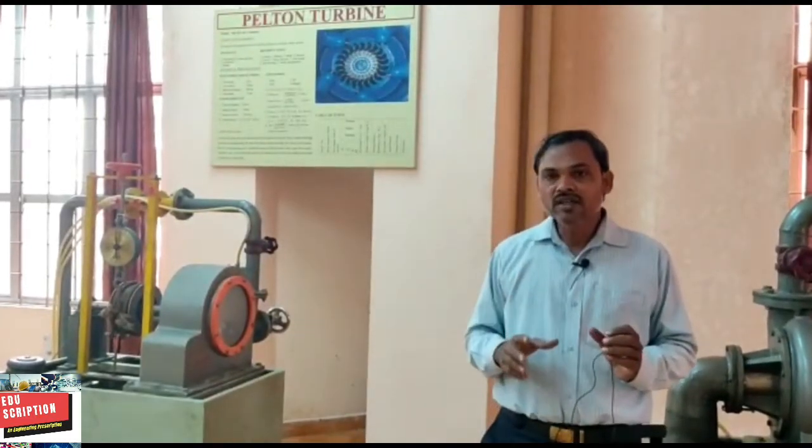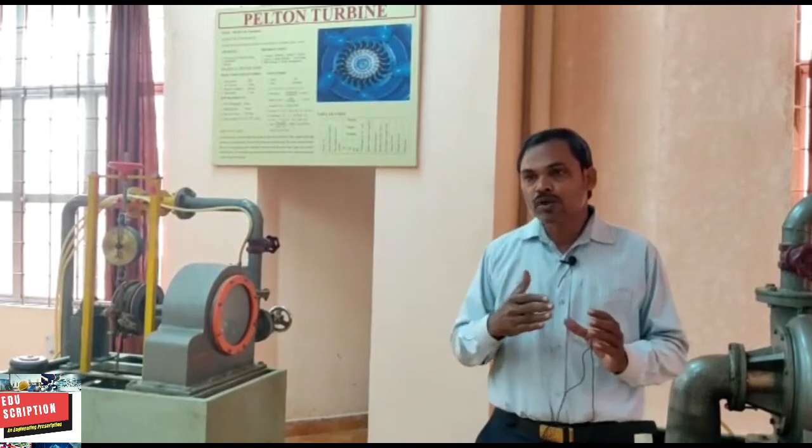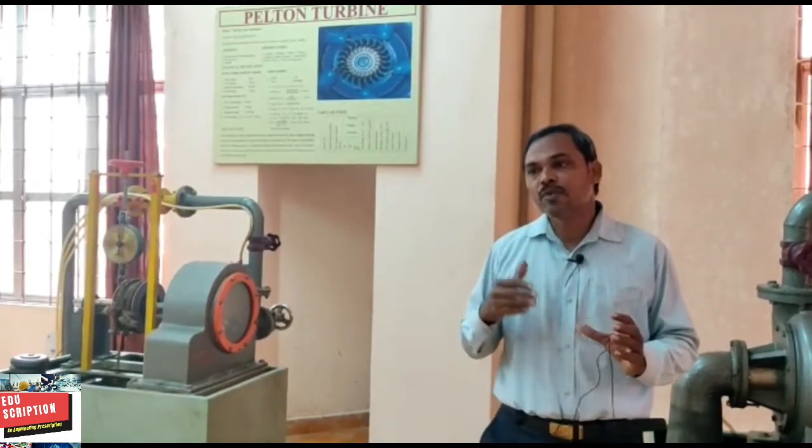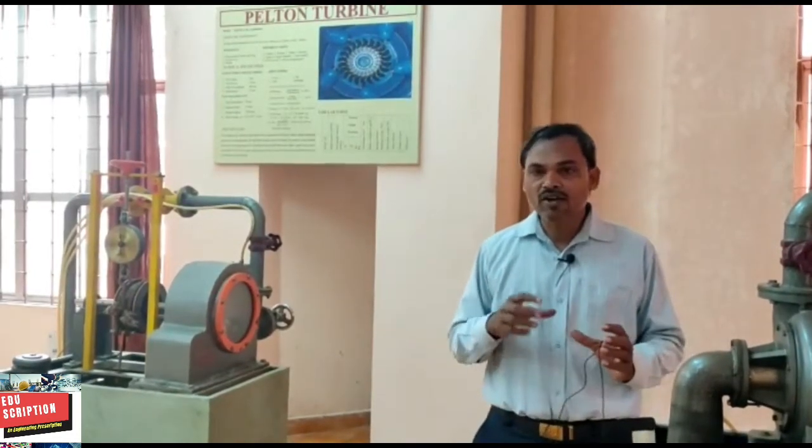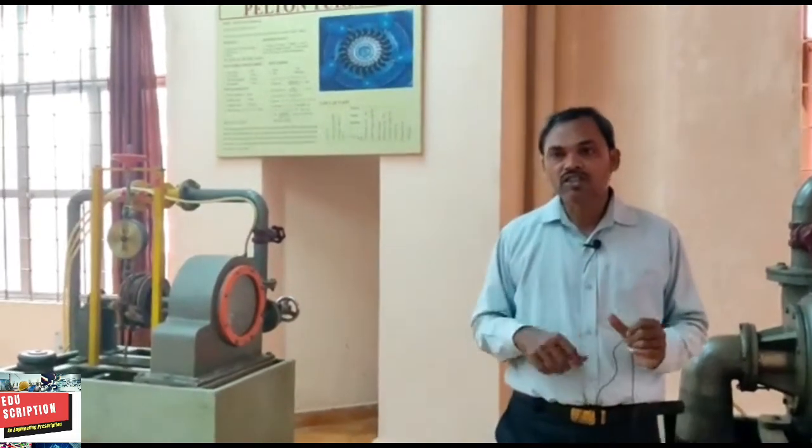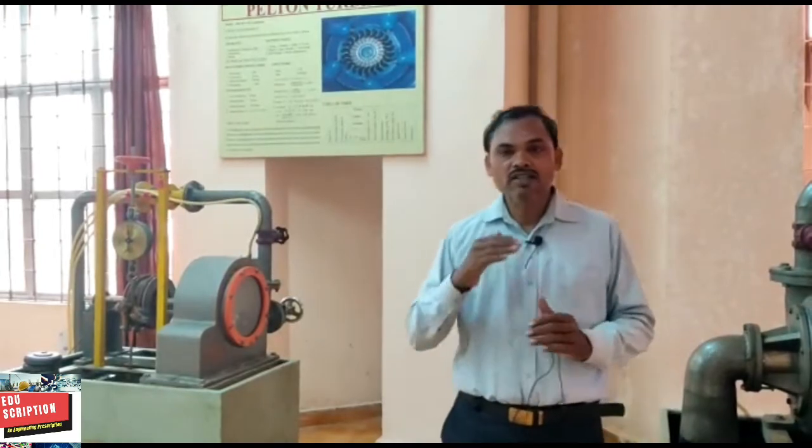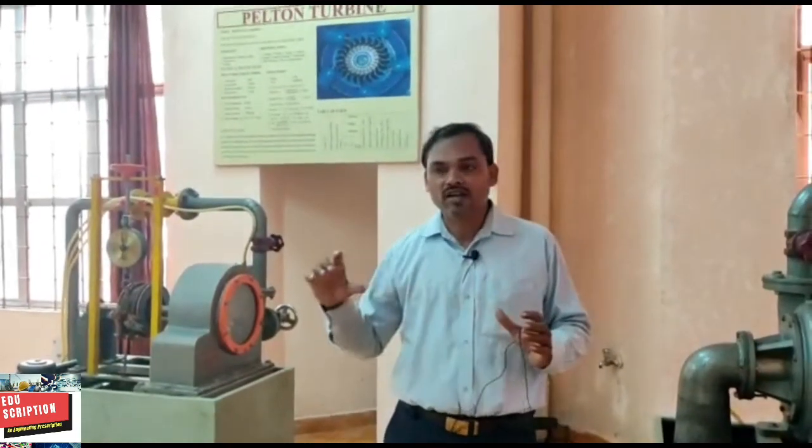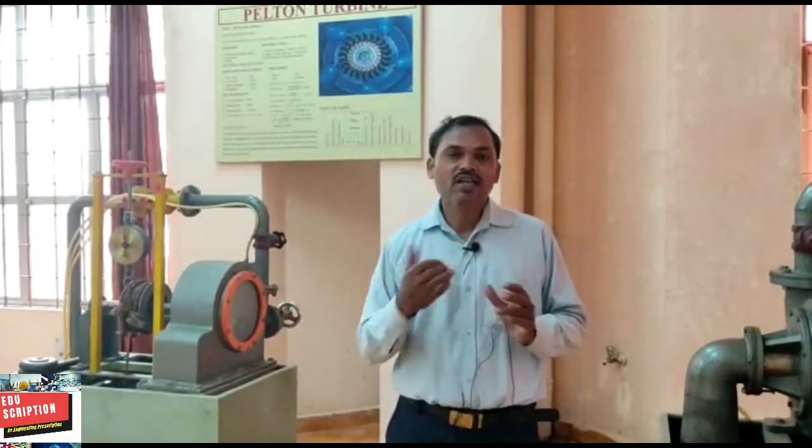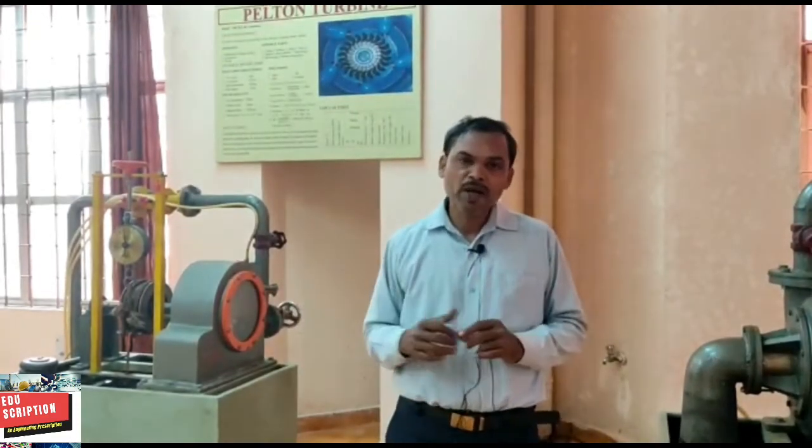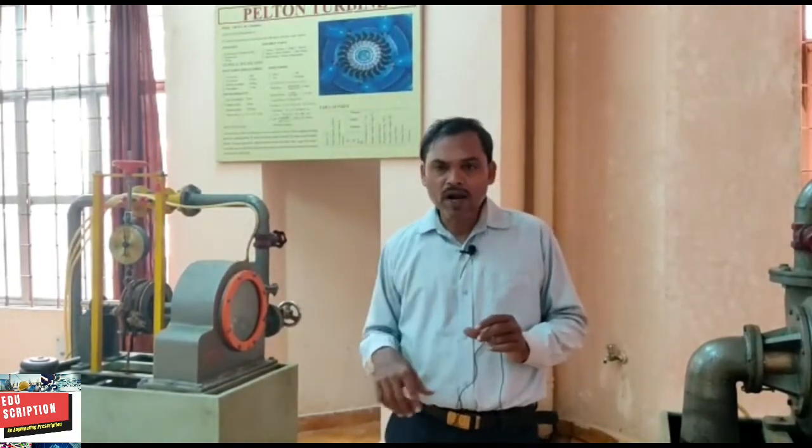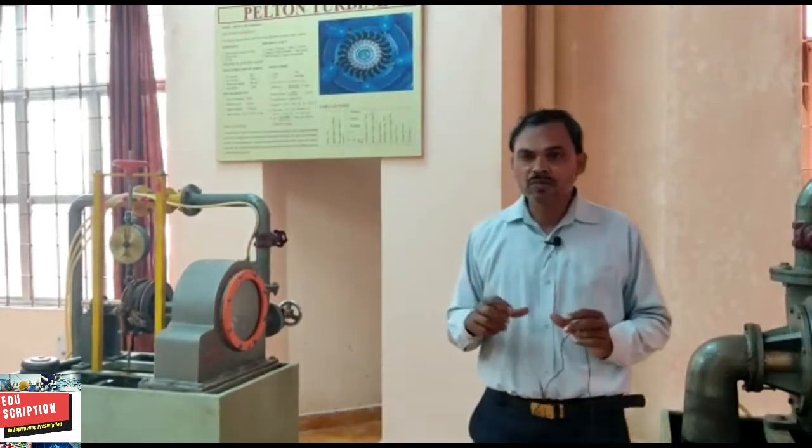Finally, the jet of water issuing from the nozzle strikes the buckets which are provided on the runner. Thus the runner rotates and the runner is keyed to a shaft, and the shaft is coupled to a generator. That's why it will produce electricity.